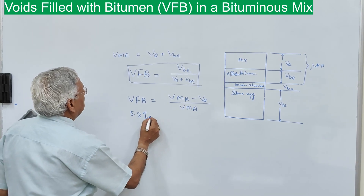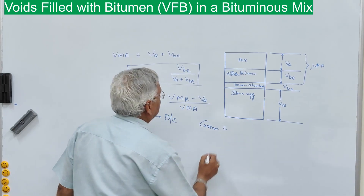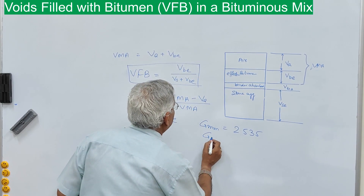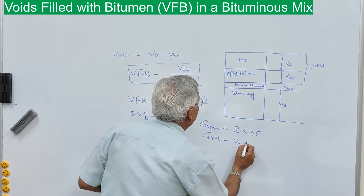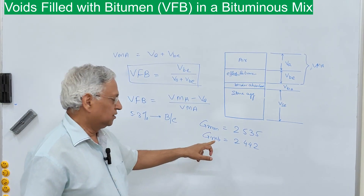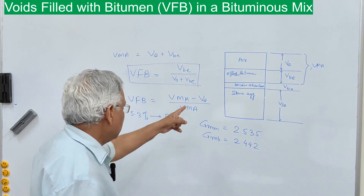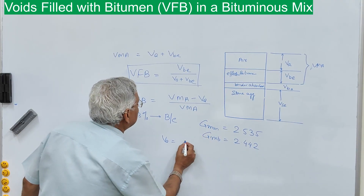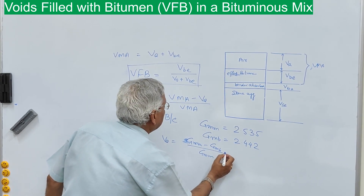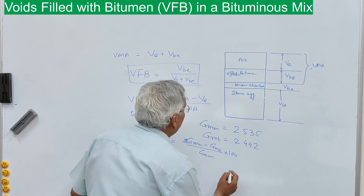The theoretical specific gravity of the mix GMM is 2.535, and the bulk specific gravity of the mix GMB is 2.442. The question is: what is the value of VFB? Air voids can be calculated directly from these two densities as (GMM minus GMB) divided by GMM, multiplied by 100. Putting in these values, you get air voids in the mix as 3.7 percent.